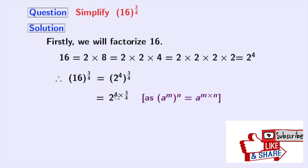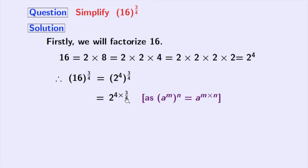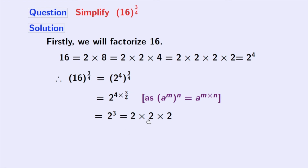In the power, 4 and 4 cancel, so we have 2 to the power 3. Since this is the product of three 2s, we can write it as 2 times 2 times 2, and this gives us 8 as our final answer.